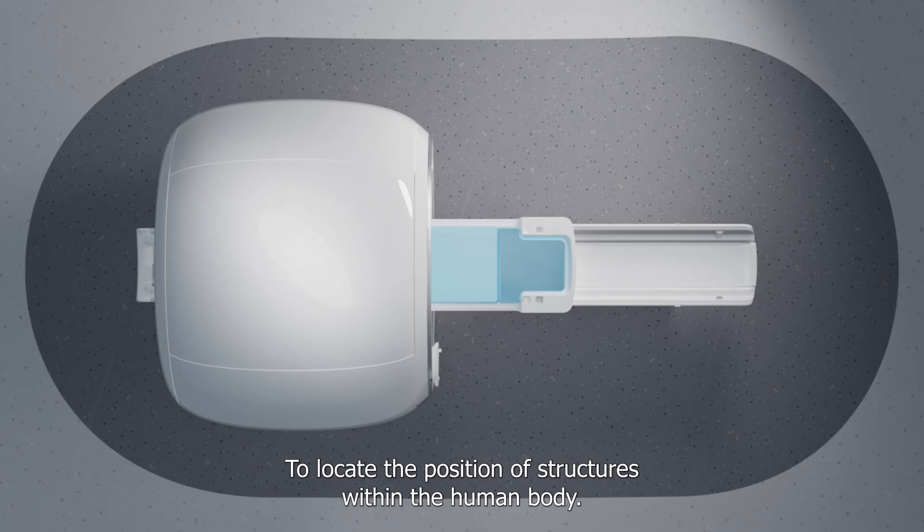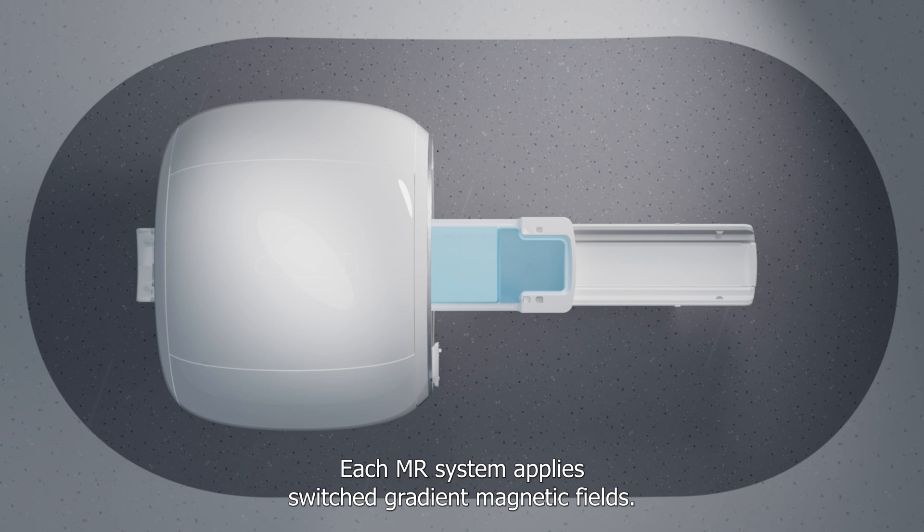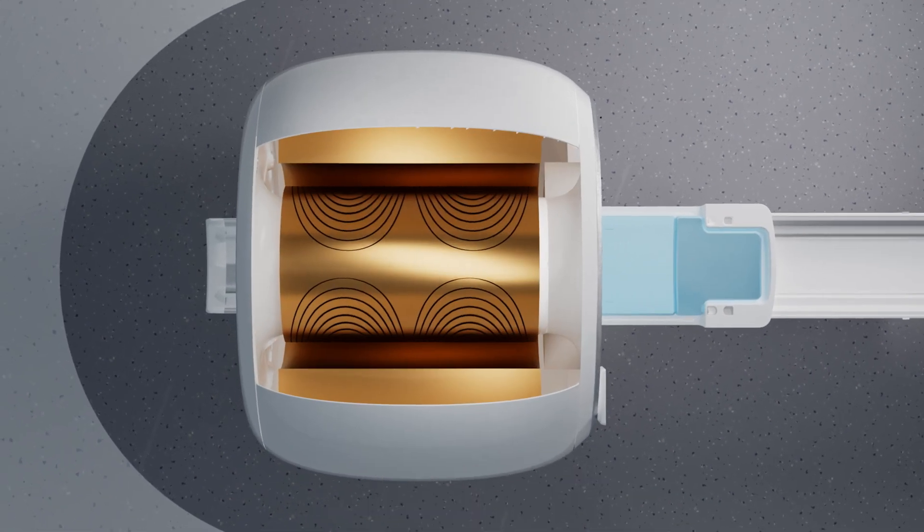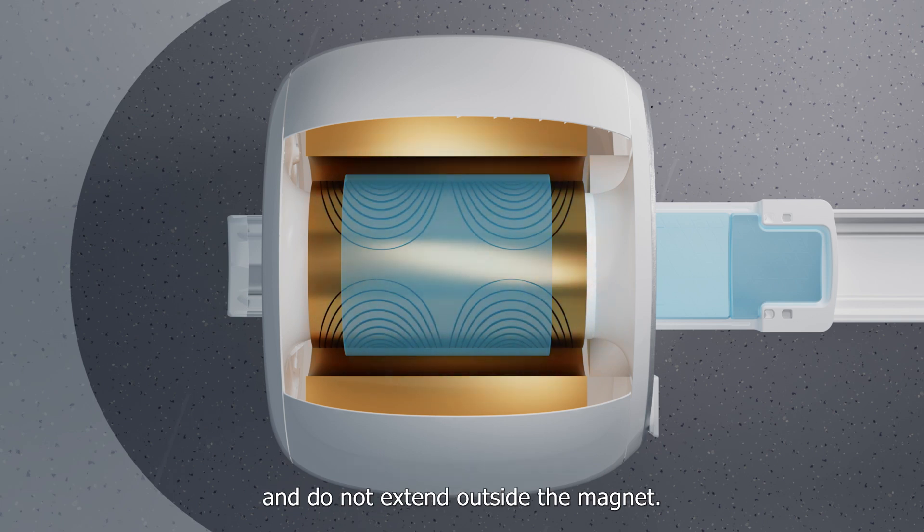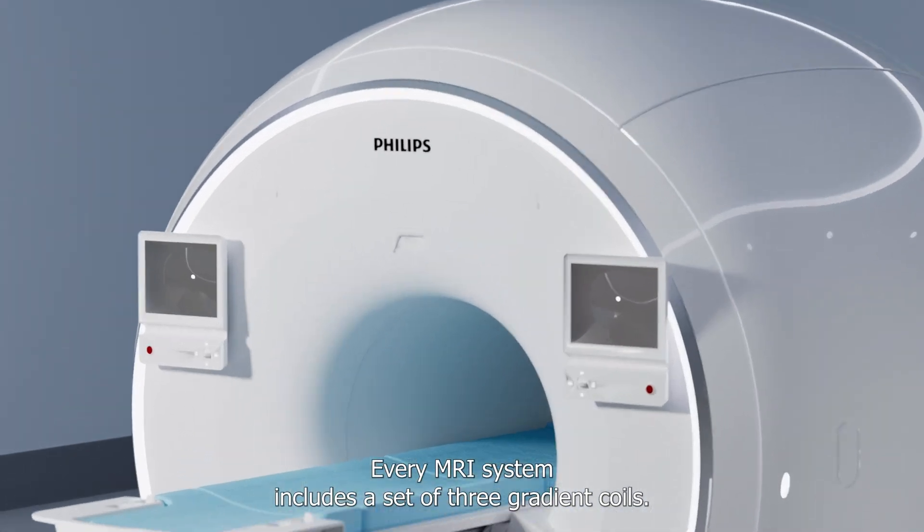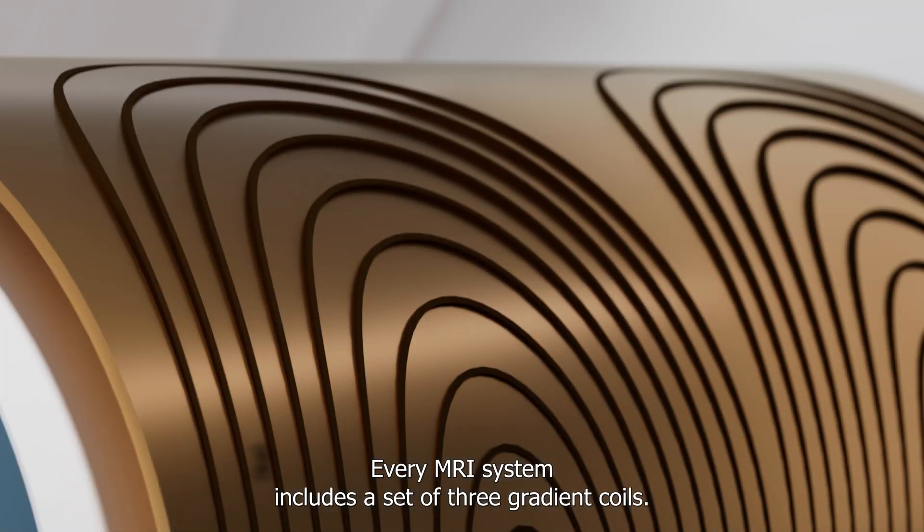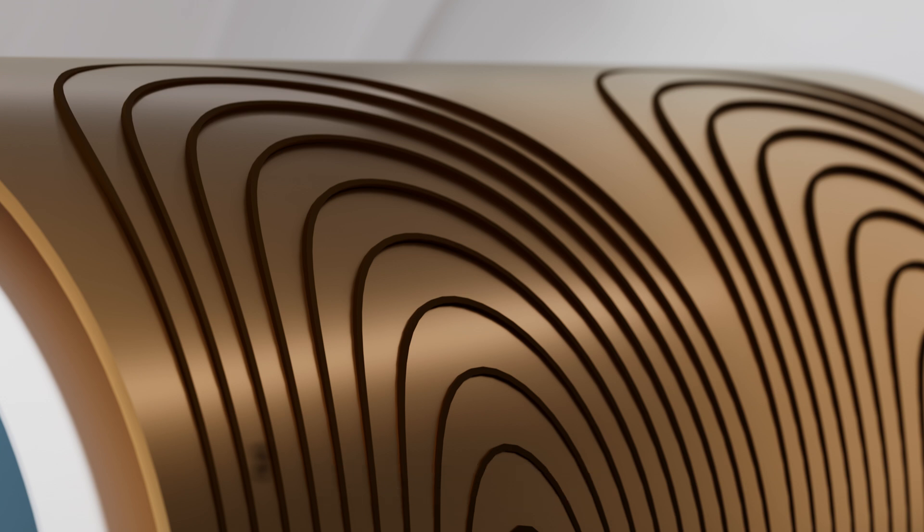To locate the position of structures within the human body, each MR system applies switched gradient magnetic fields. These switching gradient fields are only active during scanning and do not extend outside the magnet. Every MRI system includes a set of three gradient coils. These gradient coils create the gradient magnetic fields used for the spatial encoding of the MR signal.